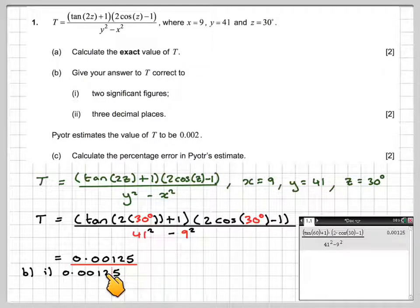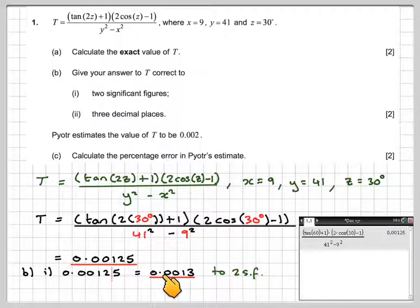The 5 will make that 2 a 3, and therefore the final answer is 0.0013. Do not put any number after the 3, because you'll be adding another significant figure. So it is 0.0013 to two significant figures.